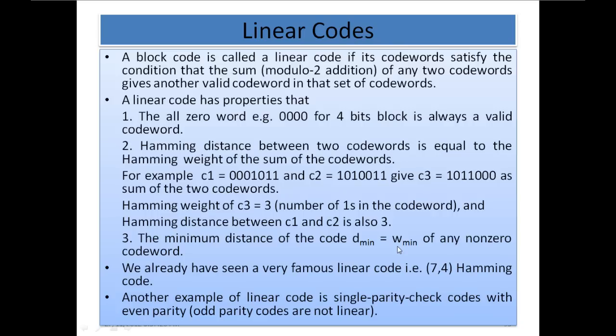We have already seen a very famous linear code: the (7,4) Hamming code, which is actually a linear code. Another example of a linear code is single parity check codes with even parity. Odd parity codes are not linear.